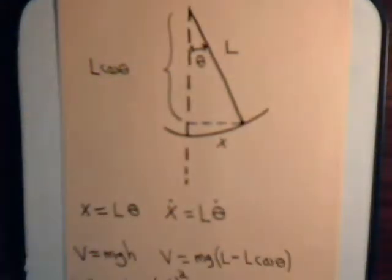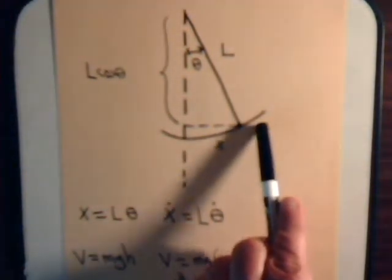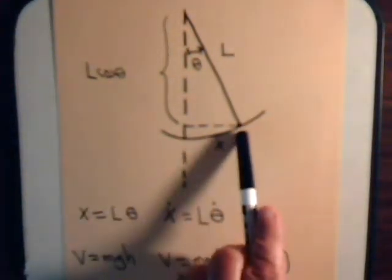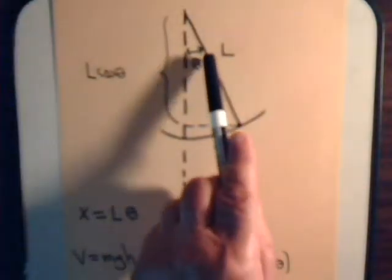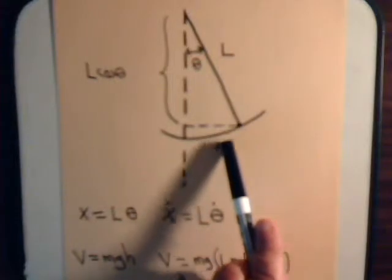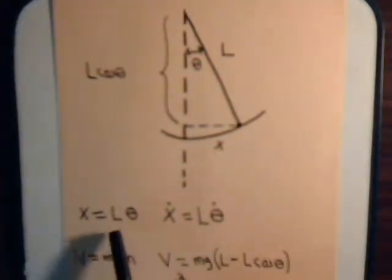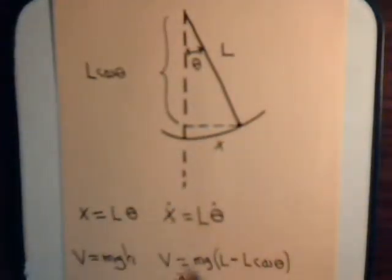Here we have a simple pendulum. The arc length that it swings through we call X, and the angular displacement theta is measured in radians. The length of the pendulum is L, so the arc displacement X equals L times theta, and the velocity dx/dt, or x-dot, equals L times theta-dot.